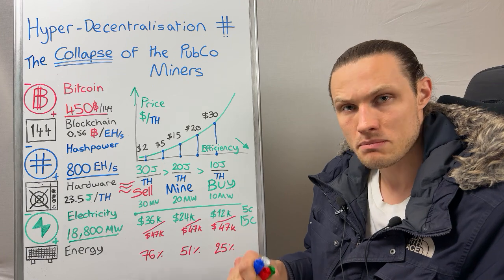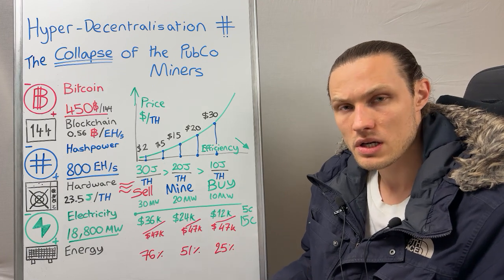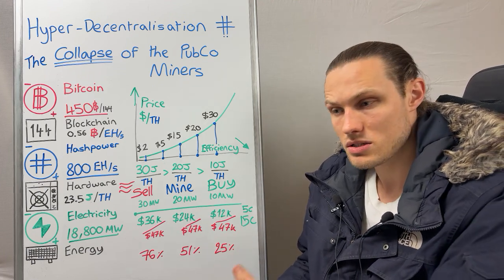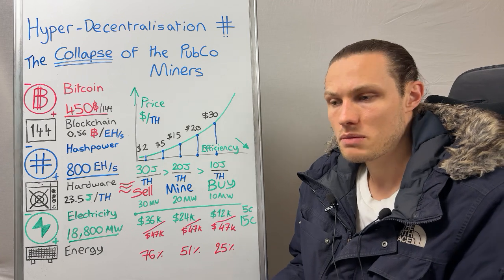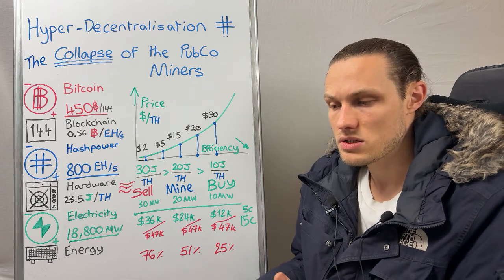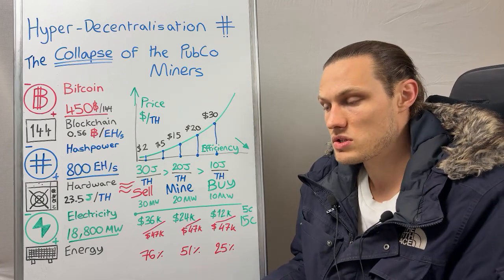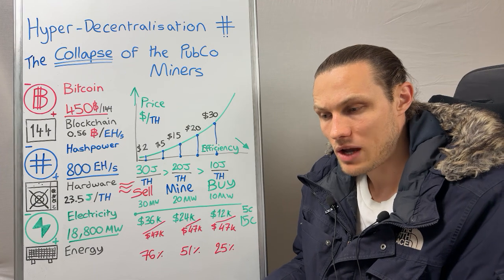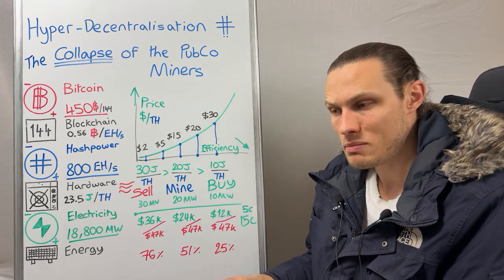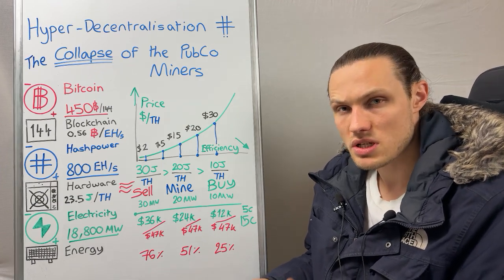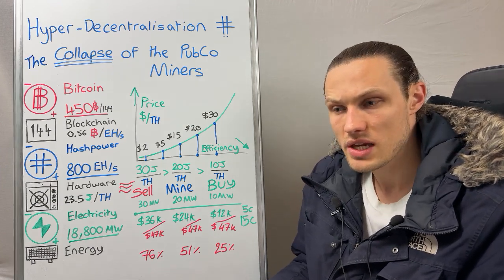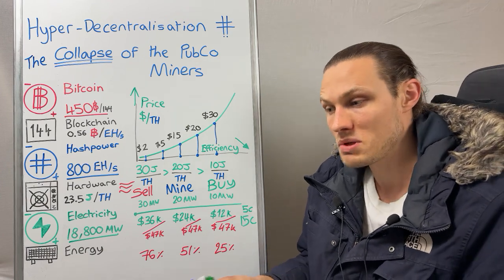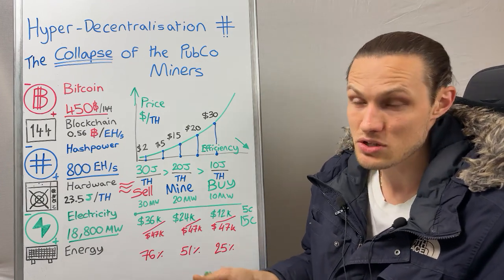Demand response — selling and buying power to stabilize the grid — is one option, as are heating systems with the computers. But the problem is that a site consuming several megawatts of power is producing several megawatts of heat. You don't need that much heat in one particular location. It has to be more decentralized.